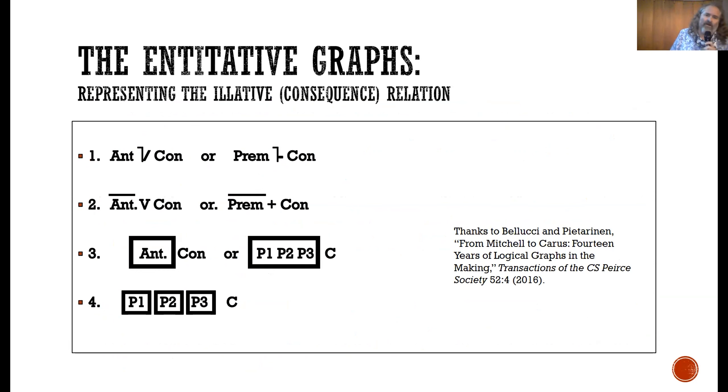This is actually my favorite slide of the whole talk. Because before Peirce comes up with the existential graphs, his mature system, he played around with something called the entitative graphs, where his task was that of representing the illative, what he calls the illative, or the consequence relation. Basically, what he thought of as alternately the relationship between antecedents and consequence, or premises and conclusion.